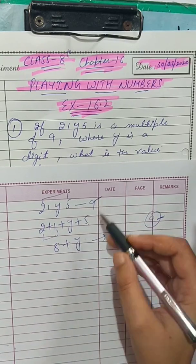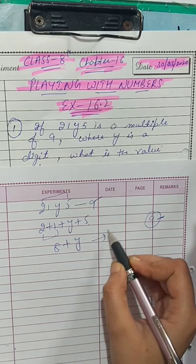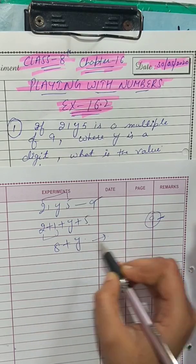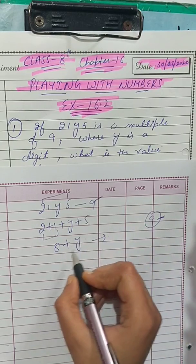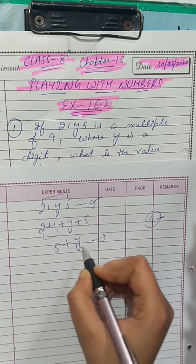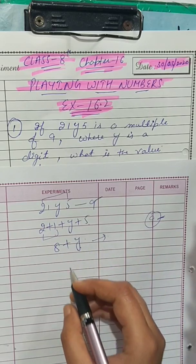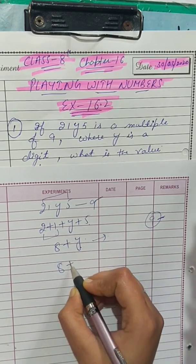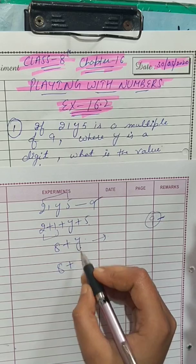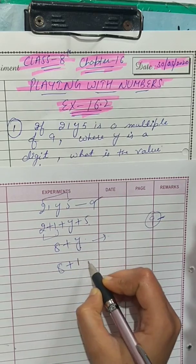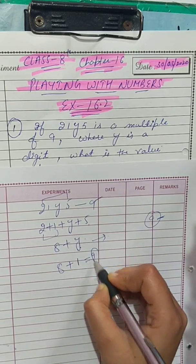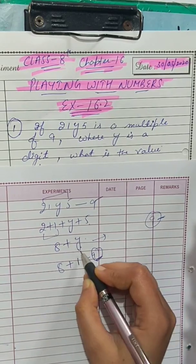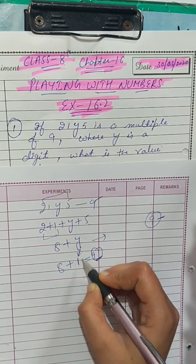Now, 8 + y must be a multiple of 9 — meaning the result should be a number in the table of 9. If we put y = 1 in place of y, we get 8 + 1 = 9, which is in the table of 9.